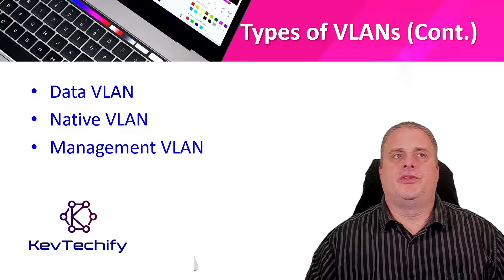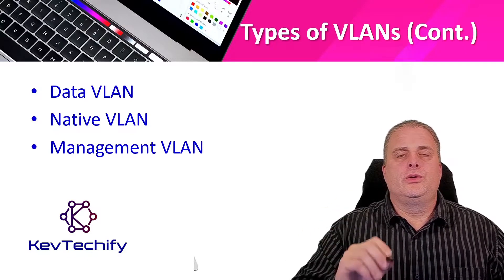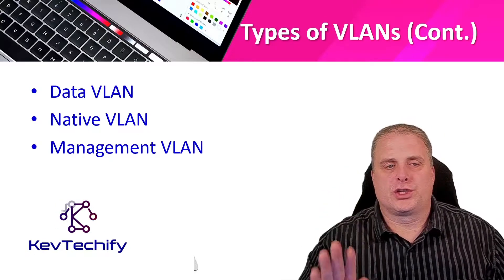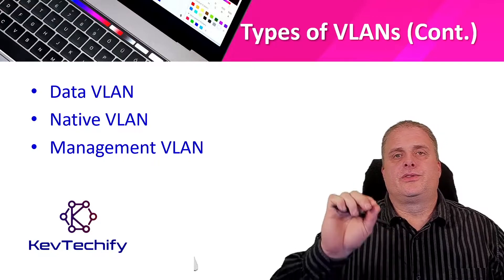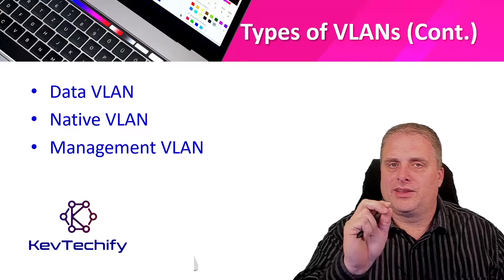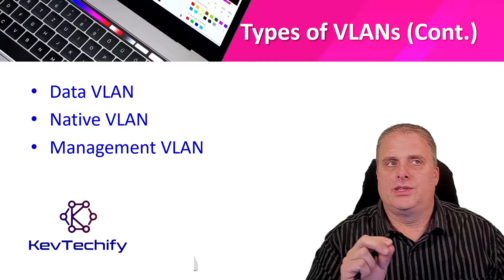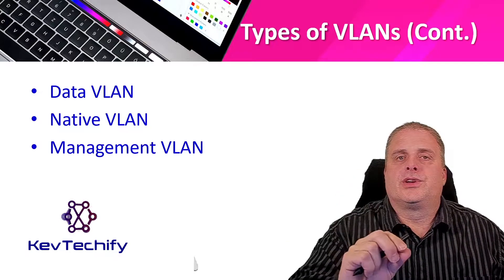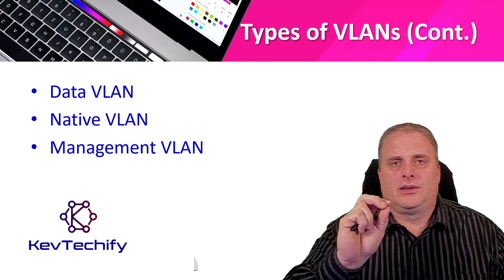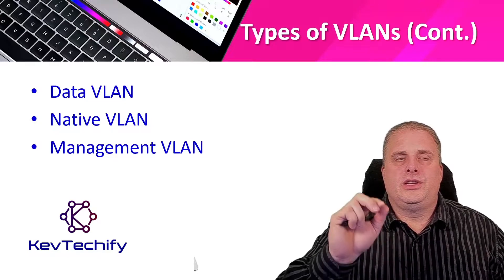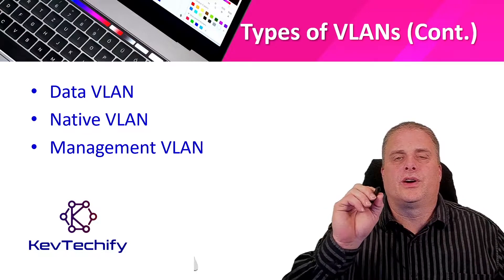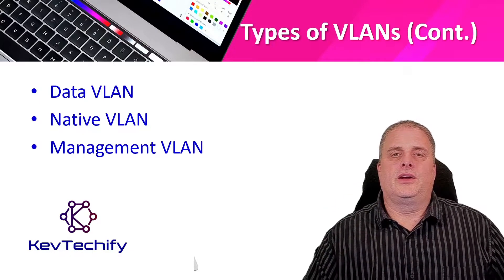We also have our management VLAN. This is where you go in and configure your intermediary devices — routers and switches. It is used for Telnet and SSH. As a security note, don't use Telnet because it sends your information in clear text — always use SSH. Your virtual terminal emulators, your VTY lines — PuTTY, Tera Term — are going to use this management VLAN. Typically, this is the VLAN used for our switch virtual interfaces on our Layer 2 switches.